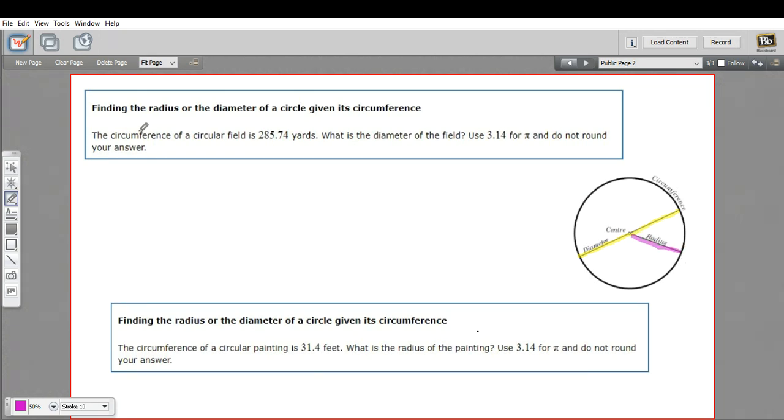So diameter is twice the radius, radius is half the diameter. And all we need to solve these problems is really just a formula for the circumference. The circumference of a circle is 2πr, or it's just π times the diameter.